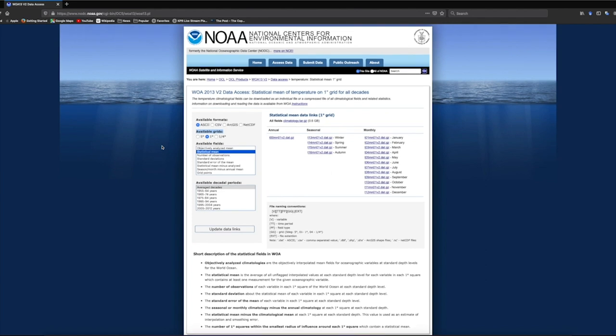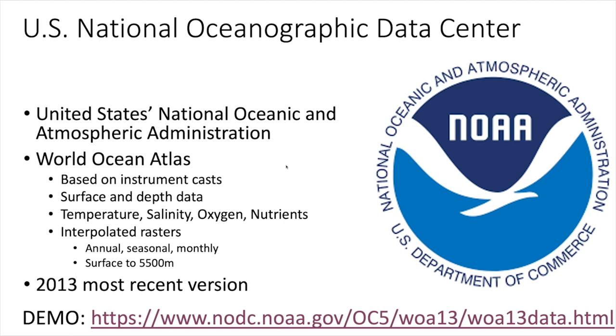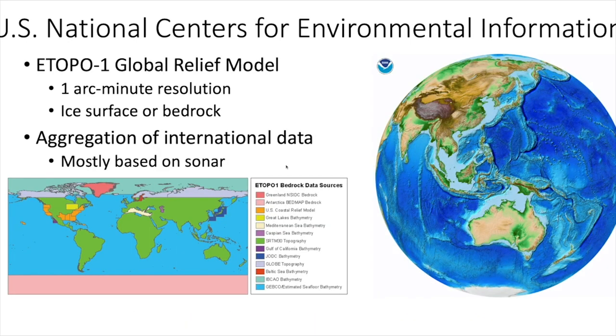So if we go back to the presentation. Alright. So next up we have the U.S. National Centers for Environmental Information's ETOPO-1 Global Relief Model. So this is both terrestrial and bathymetry. But it's essentially a worldwide topography map.